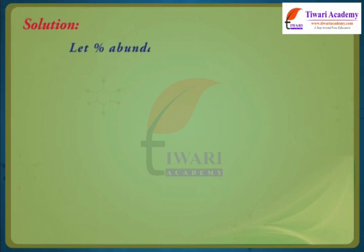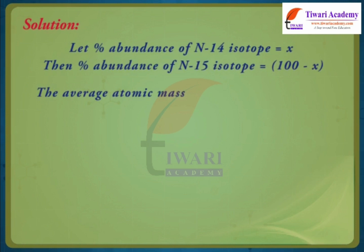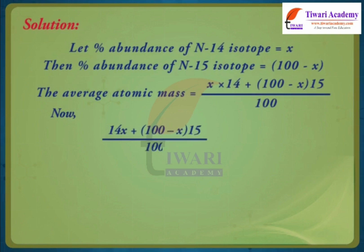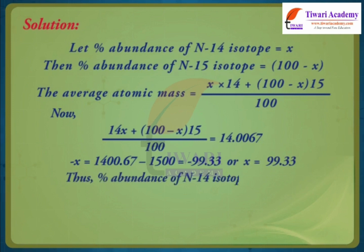Solution. Let percentage abundance of N-14 isotope is equal to x. Then percentage of abundance of N-15 isotope is equal to 100 minus x. The average atomic mass is equal to x into 14 plus 100 minus x into 15 upon 100. Now 14x plus 100 minus x into 15 upon 100 is equal to 14.0067. Solving: minus x is equal to 1400.67 minus 1500 is equal to minus 99.33 or x is equal to 99.33. Thus percentage abundance of N-14 isotope is equal to 99.33% and percentage abundance of N-15 isotope is equal to 0.67%.